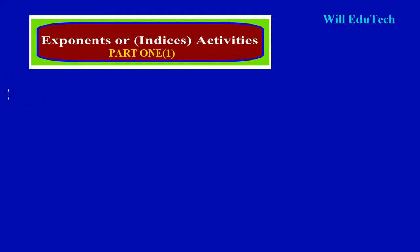Let's get into it quickly. Let's say in the exam you walked in and you saw a question like this. Number one: we have 4k multiplied by 2k, and I'm going to put all of that in brackets, and this is raised to the third power.